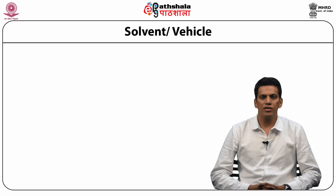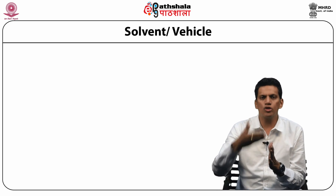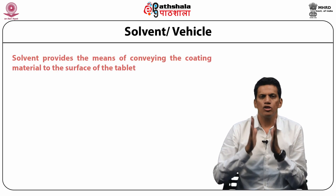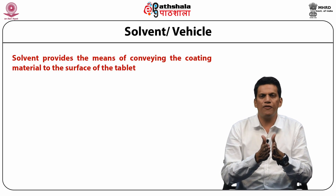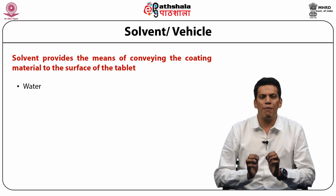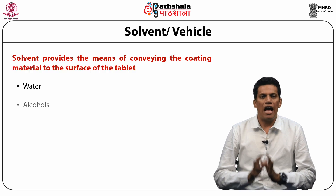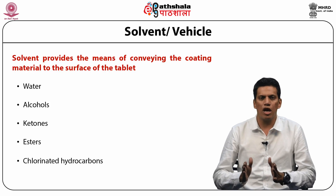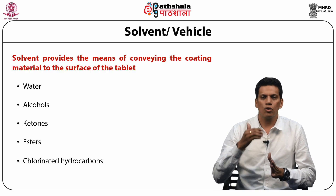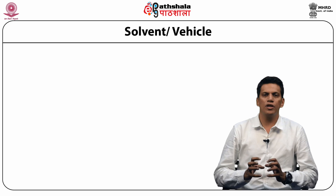The first component is solvent, also called vehicle. Solvent provides the means of conveying the coating material to the surface of the tablet. Water is primarily used as solvent for aqueous coating procedures. Alcohols, ketones, esters, and chlorinated hydrocarbons are used for organic coating.